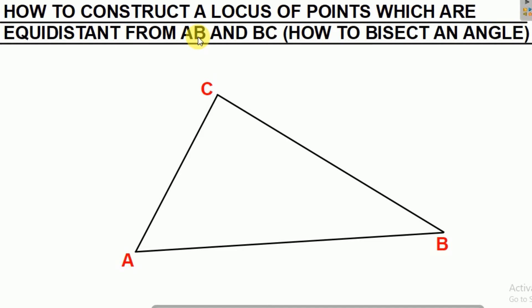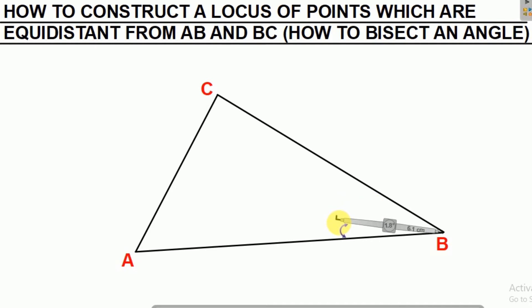To bisect angle B, we're going to get our compass and put it at point B. With any radius, we're going to construct an arc on line AB, and then also construct an arc on line BC.